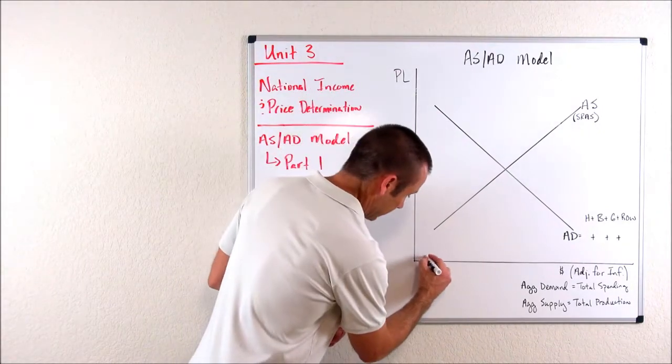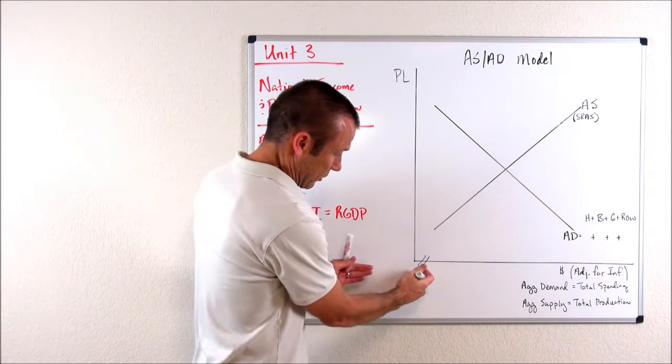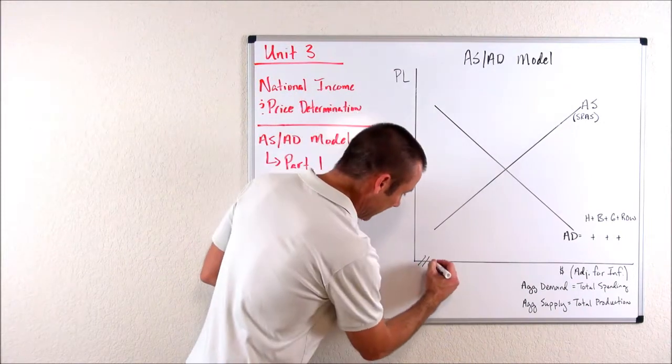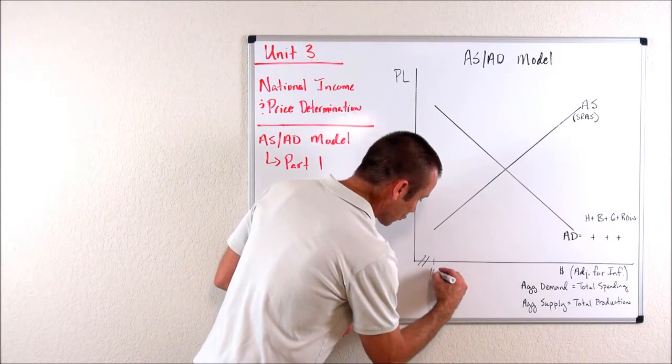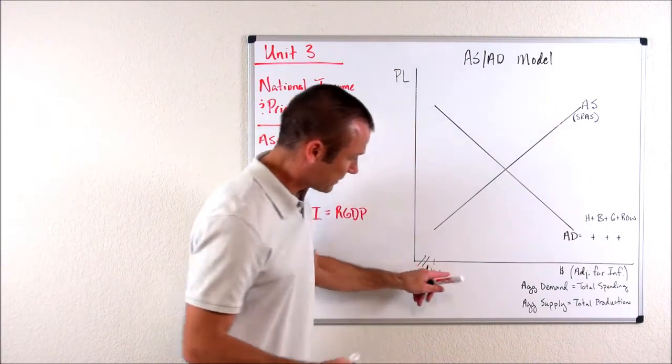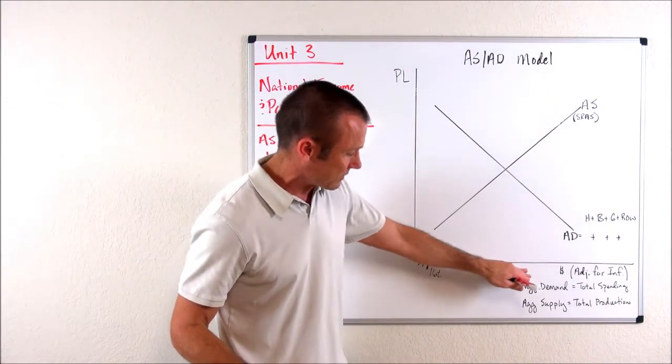And by the way, we're going to have a little break in our model. We're not actually going to start all the way at zero dollars. We might start right here at say 16 trillion dollars. And then there'd be 17 trillion, 18 trillion, 19 trillion, 20 trillion, 21 trillion for the US economy.